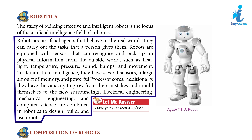Robots are artificial agents that behave in the real world. They can carry out the tasks that a person gives them. Robots are equipped with sensors that can recognize and pick up on physical information from the outside world, such as heat, light, temperature, pressure, sound, bumps, and movement. To demonstrate intelligence, they have several sensors, a large amount of memory, and powerful processor codes.